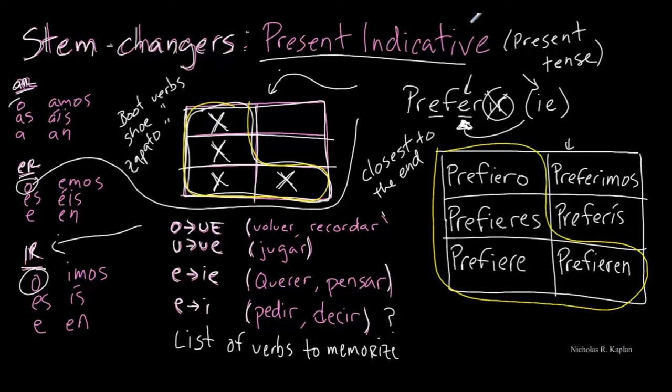Okay, when you're working with your stem changing verbs in the present tense, we remember that we need our boot verb or our shoe verb because they only change in these persons right here. These are the only changes that we have: O to UE, U to UE, E to IE, and E to I. And the only way you're going to know if they're a stem changer is by memorizing them. So find a list, memorize them, and then start practicing. All right, go out and try some. Let me know how it goes.